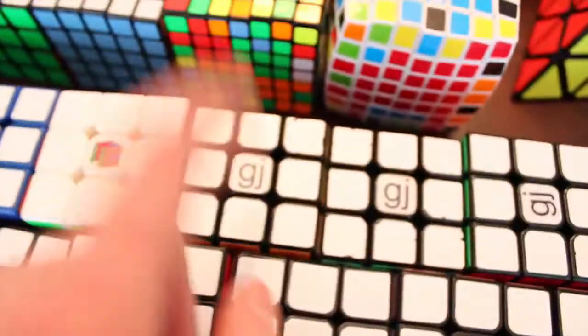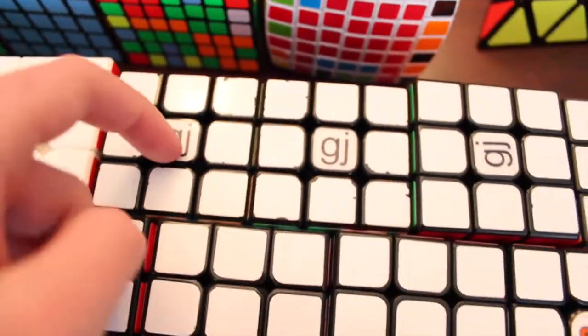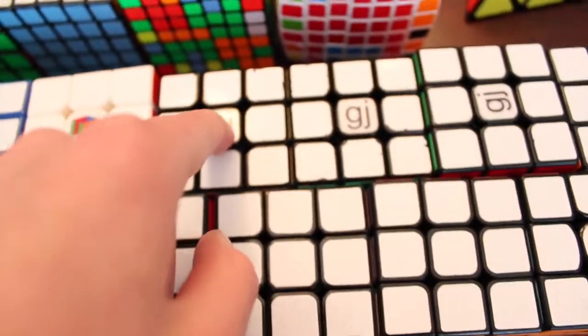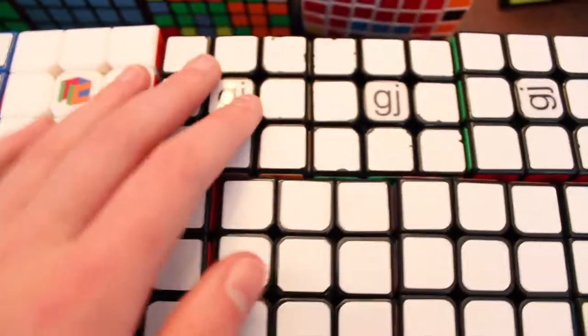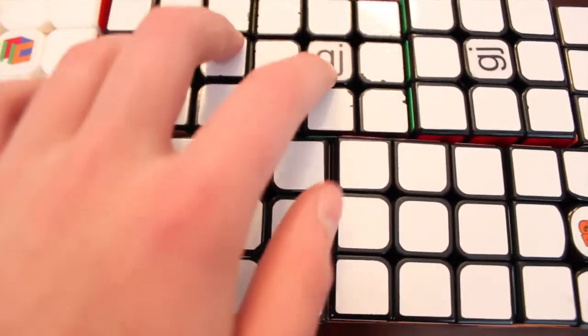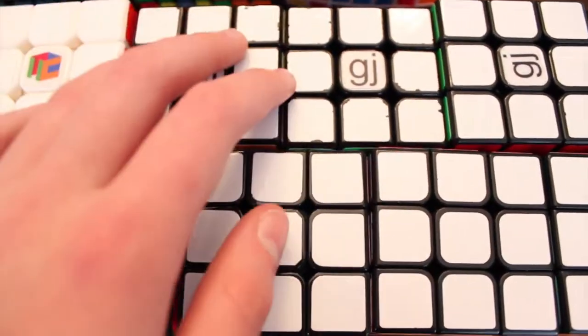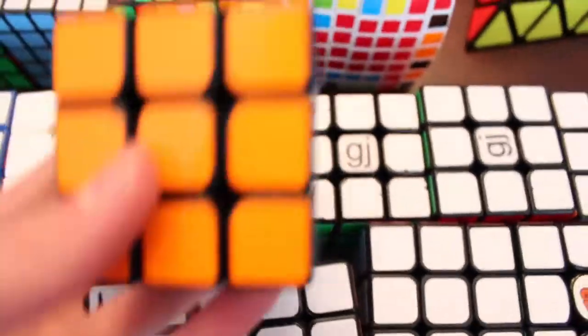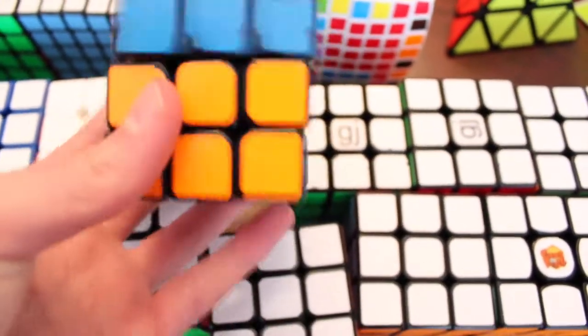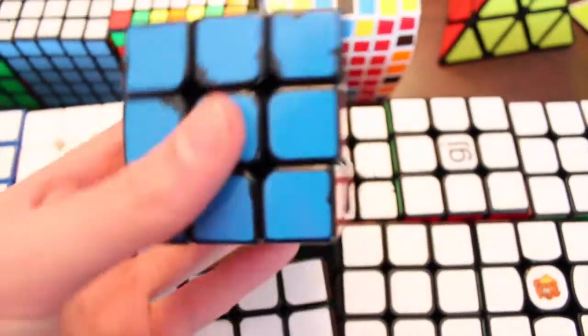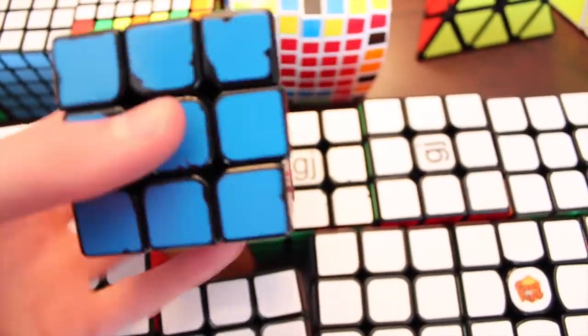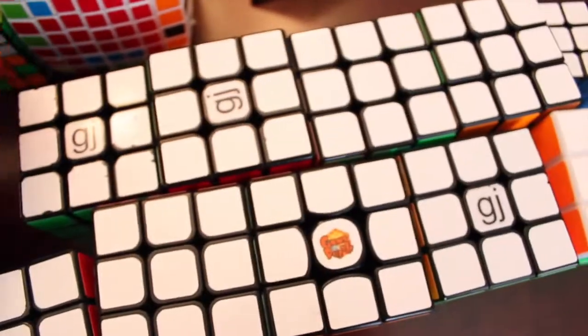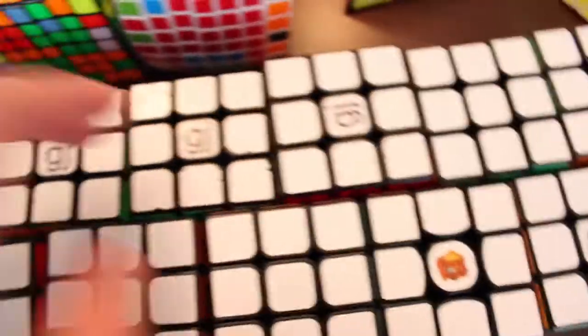And then I moved on to the Mini V1, Aulong Mini V1. And this has been my main since it came out probably. So, I have two of those. Just decided to get another one because I loved it so much. Yeah, this one's my main right here. Good cube. Love it. Might need a sticker change on that. But, there's that.